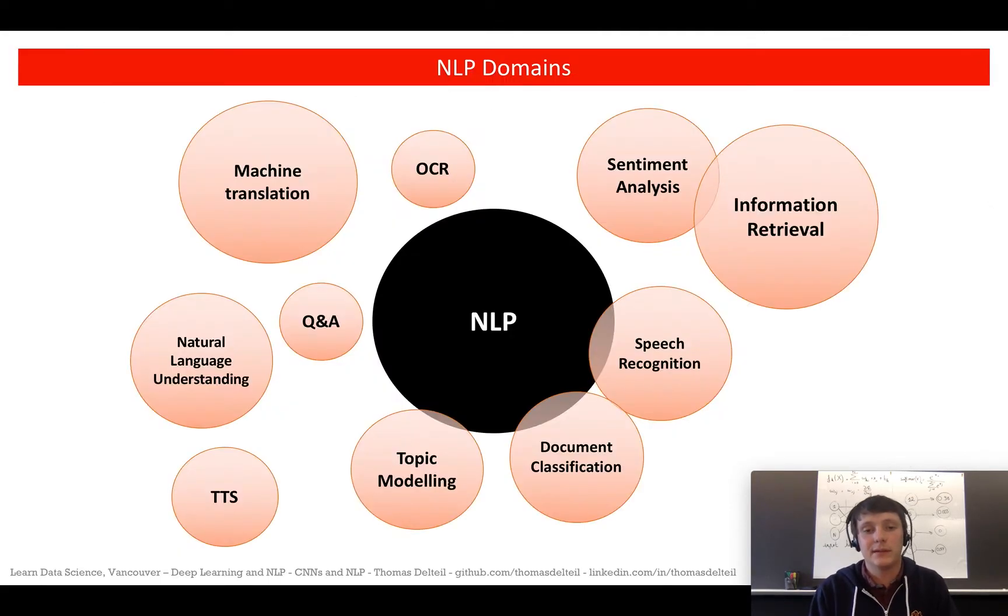On to natural language processing. So what is natural language processing? It encompasses a lot of domains with different overlapping areas. We can go from machine translation to text-to-speech, speech-to-text, text classification, automatic Q&A answering, OCR, sentiment analysis. We're not going to cover everything, but actually convolutions are used across all these domains.